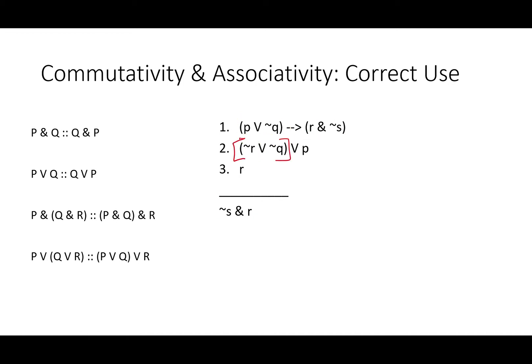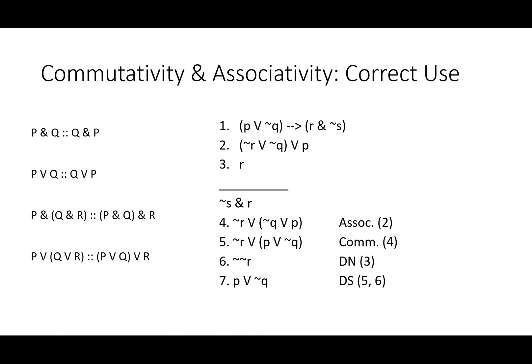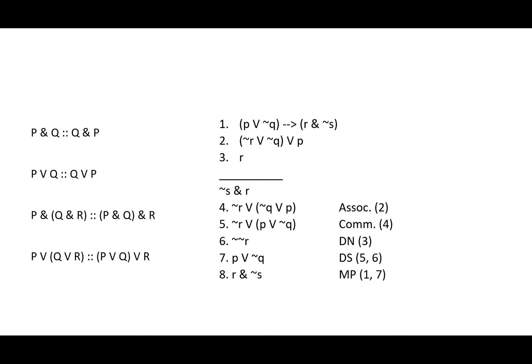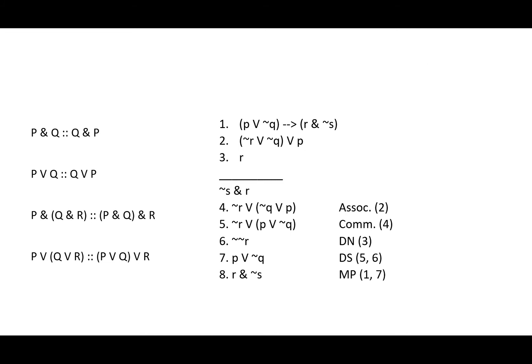So our first step is going to be isolating not R with associativity. We'll move the parentheses, and now we've got not R by itself. We'll go ahead and do a commutativity as well, so that the right side of our disjunction matches the antecedent of the conditional. Now we do need double negation for line three, another commonly skipped rule. That will allow us to use disjunctive syllogism and get either P or Q. Now modus ponens gets us almost all the way, and commutativity finishes the job.